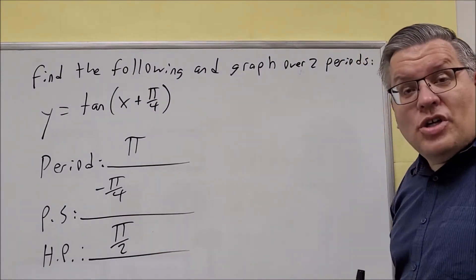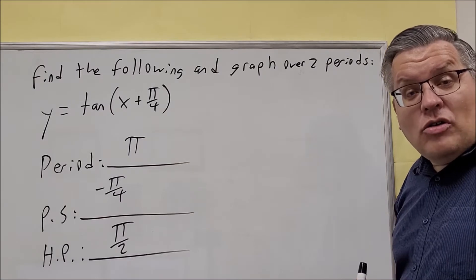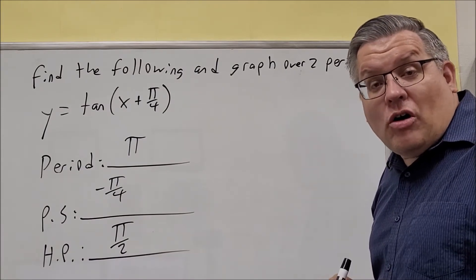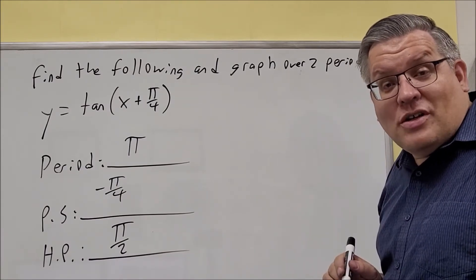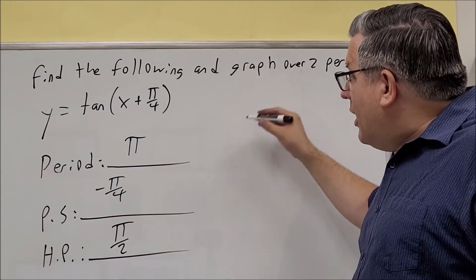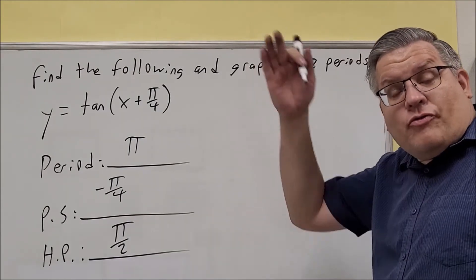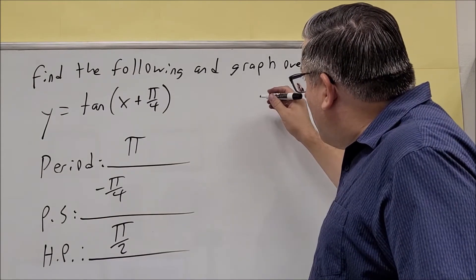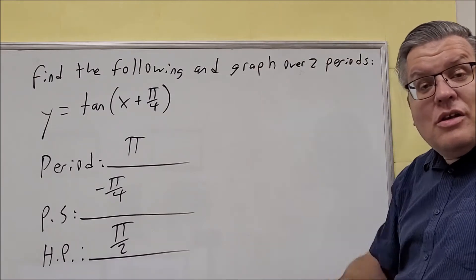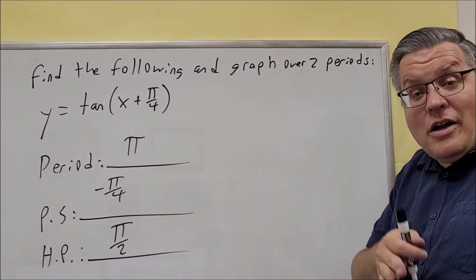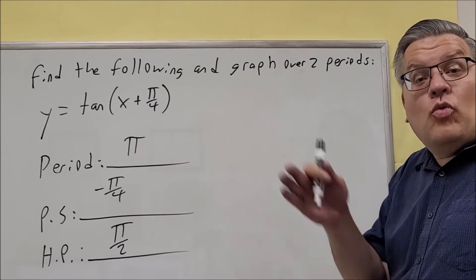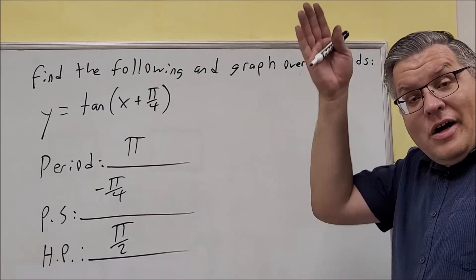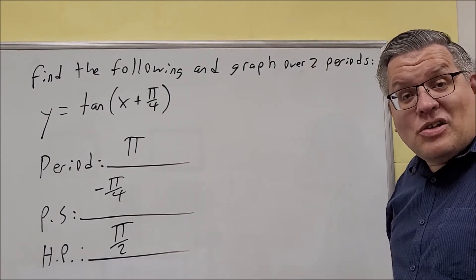Now that we have all this information, we need to find all the points that are going to be on our graph. To do this, recall the graph of tangent — it originally had vertical asymptotes around the half pi's. We had one on the vertical axis, one to the left, and one to the right. The phase shift is going to tell you where the old axis used to be.